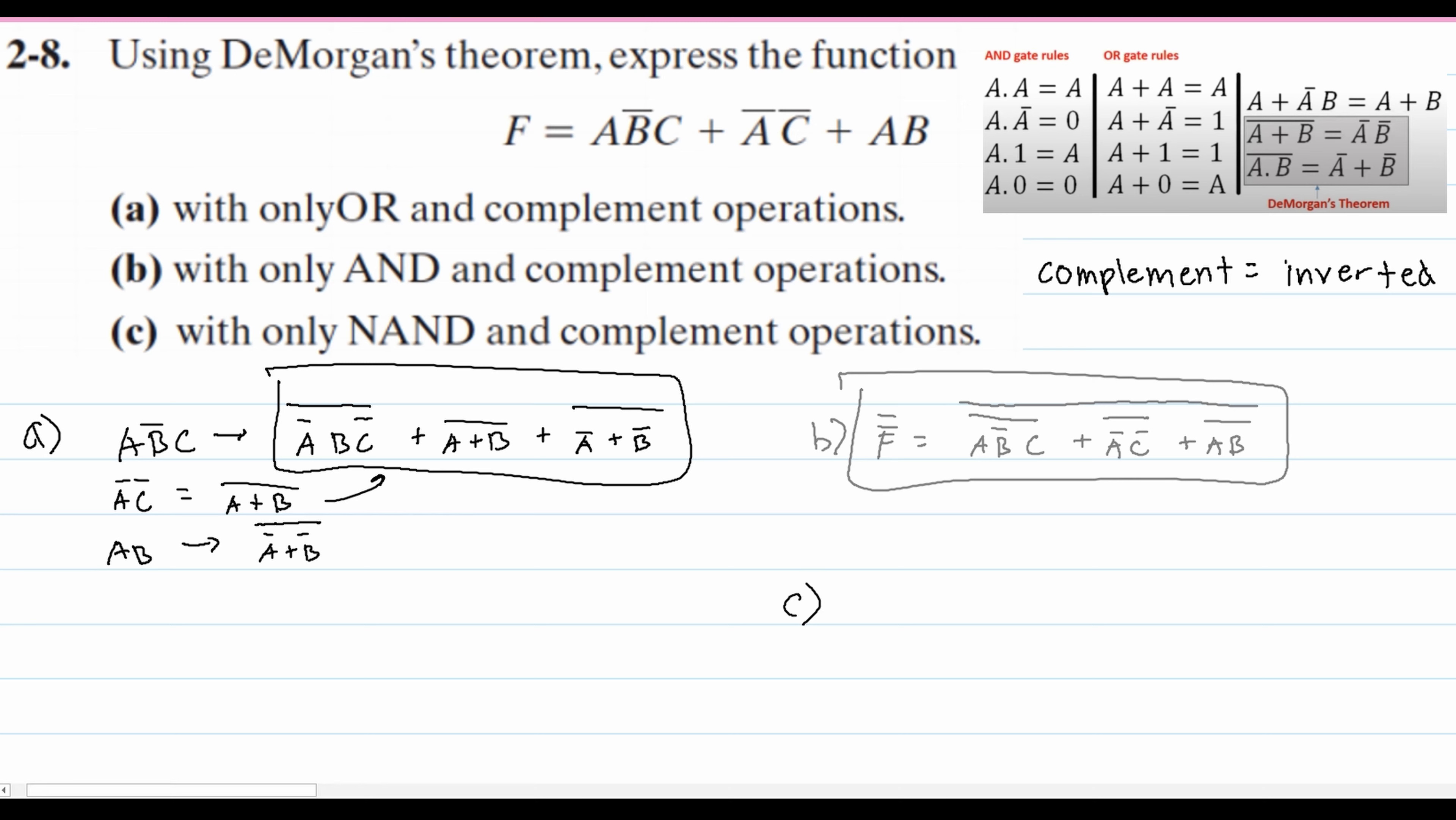Now we can look at part c with only NAND and complement operations. Well, NAND is just the logical not of AND. Basically the same thing. So we can really just copy this all and paste it in here. And this would be the correct answer for our NAND.